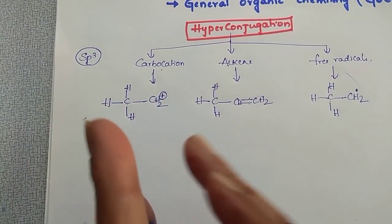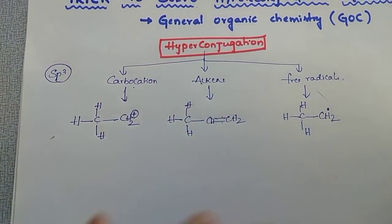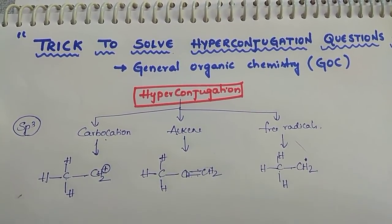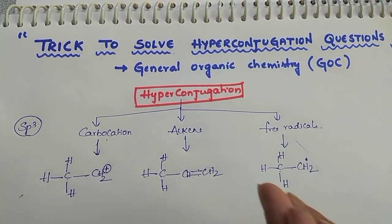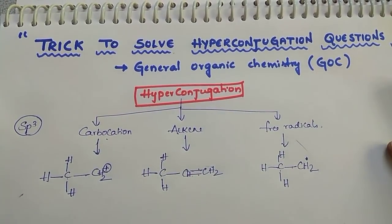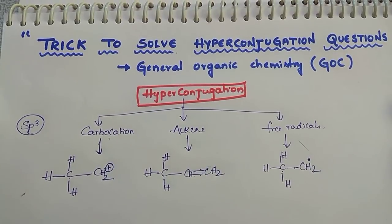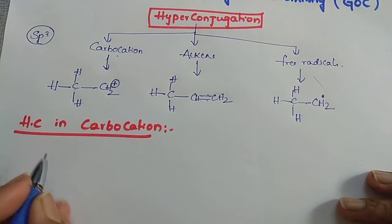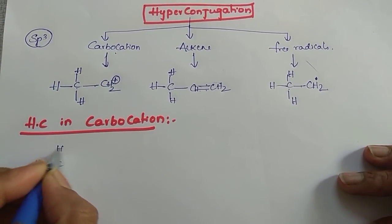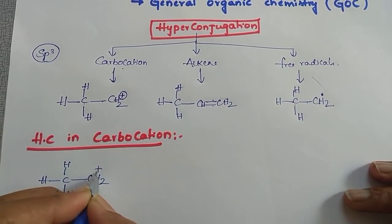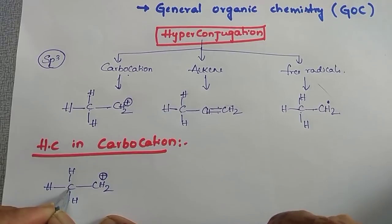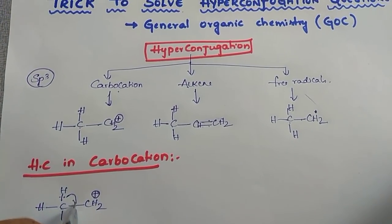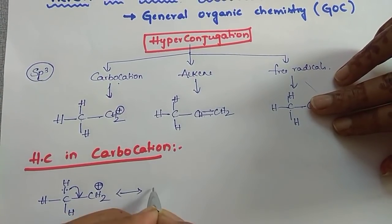Now let us see, first carbocation, then alkene, and free radicals. Practice the questions I am going to do — the easy methodology I will apply so you can solve your question banks or study materials from your college in less time and score more marks in your exams. Let us start with carbocation hyperconjugation. In carbocation, what happens is the sp3 hybridized alpha carbon has sigma electrons on the C–H bond, and those sigma electrons shift toward the carbocation.